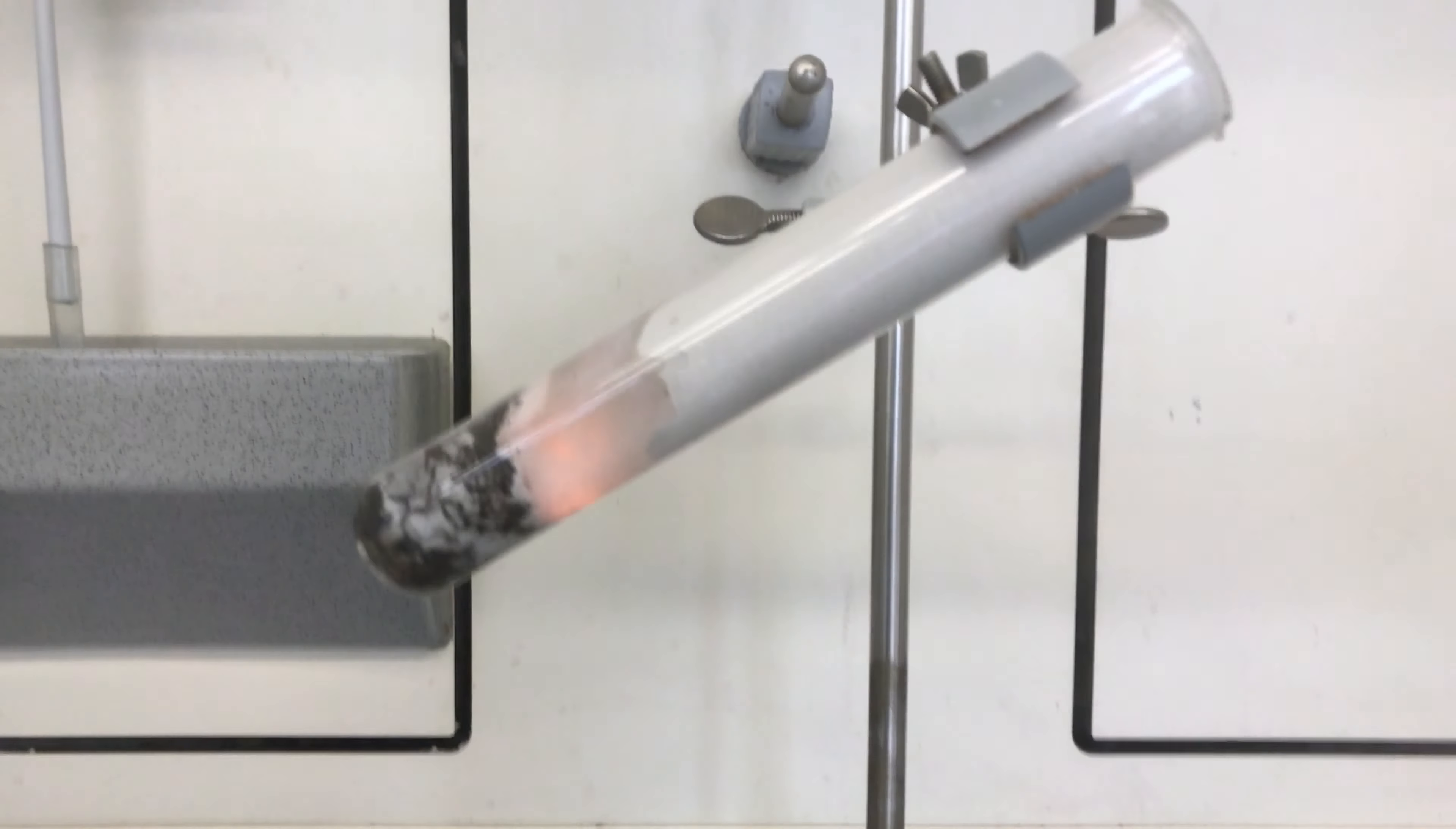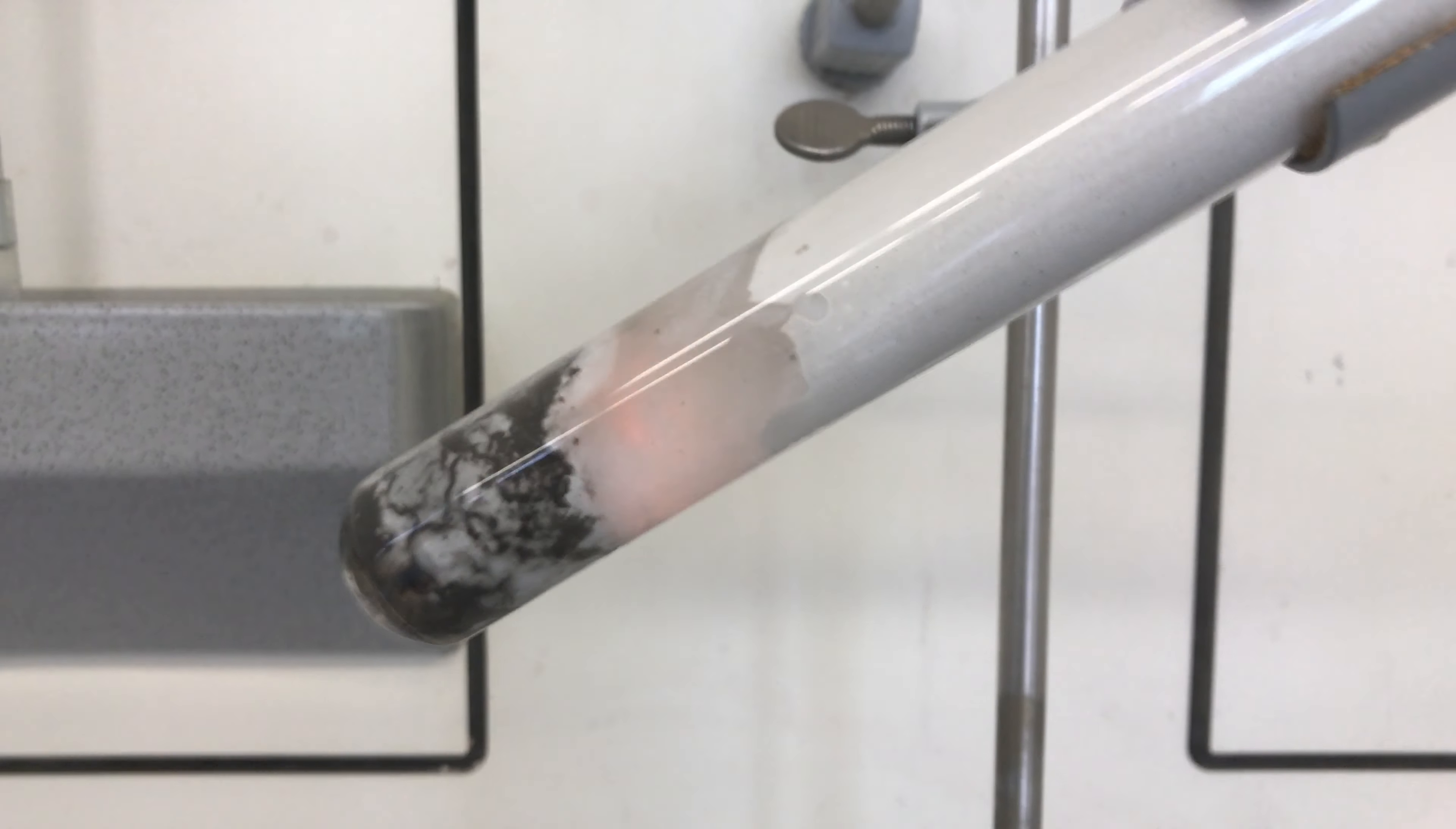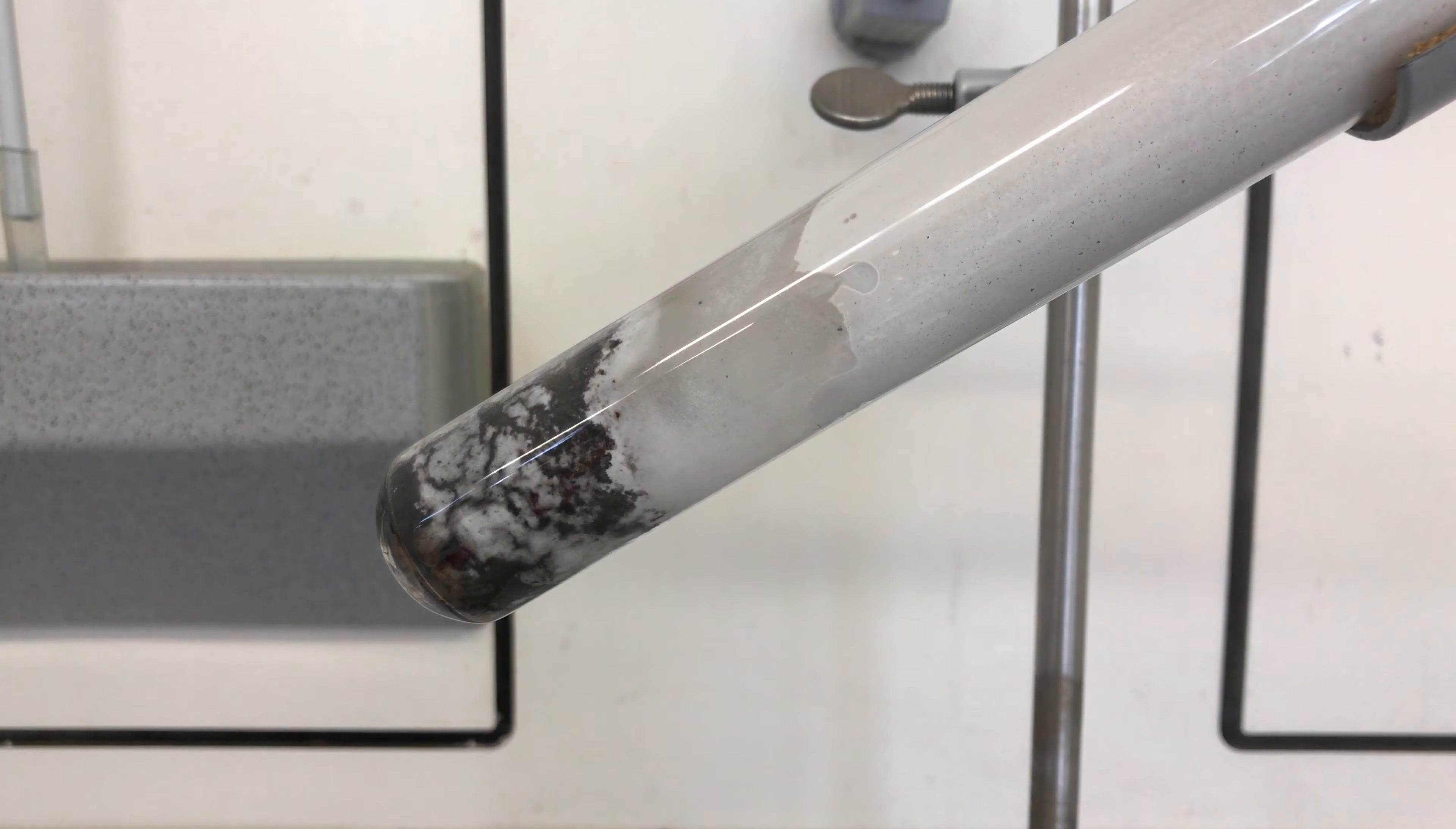Potassium chlorate as an oxidizing agent releases oxygen and makes the gummy bear burn. Potassium chlorate in return is turned into potassium chloride.